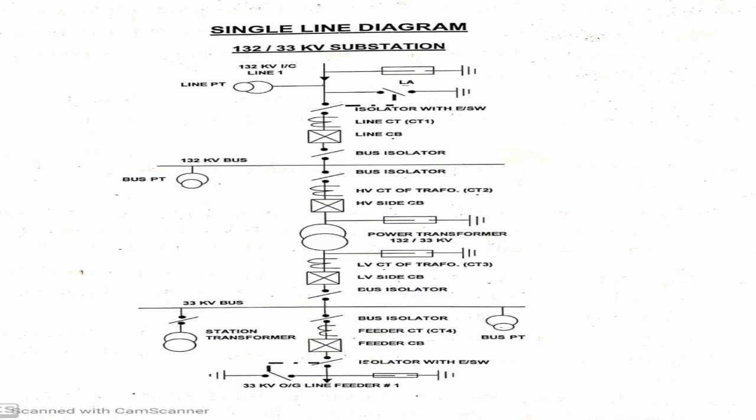Lightning arrester, power transformer, then LV CT of transformer, LV side circuit breaker, bus coupler, bus isolator, bus PT, station transformer, feeder CT — CT4, feeder circuit breaker, isolator with earth switch, lightning arrester, and outgoing to feeder 1. This is the single line diagram of 132 by 33 kV substation.